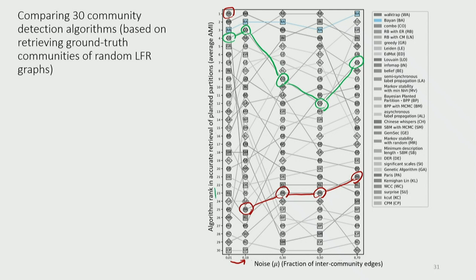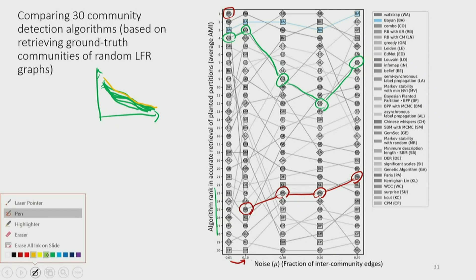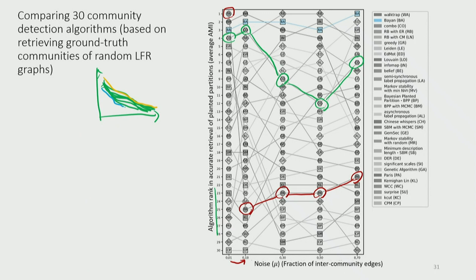To clarify: this y-axis shows the rank of algorithms by average AMI, not AMI itself. The actual AMI values decrease as noise increases, but plotting raw AMI values would be difficult to read because all the lines would be nearly on top of each other. Ranking shows clearly which algorithm is consistently best, second best, or worst relative to the others.